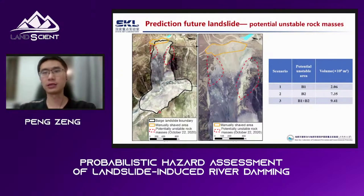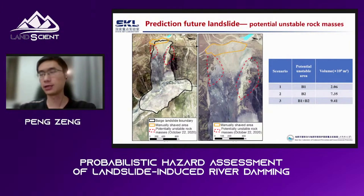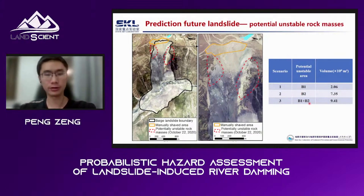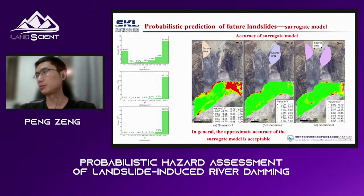We conducted a site investigation for the Bayesian analysis in October 2020 and found two potentially unstable rock masses, named B1 and B2. Their volumes are about 2 and 7.3 million cubic meters. We consider three scenarios: the sliding of each rock mass individually and their combination. Surrogate models are constructed for all three scenarios to improve computational efficiency, and their performance is acceptable, as indicated by the green color showing good approximation.